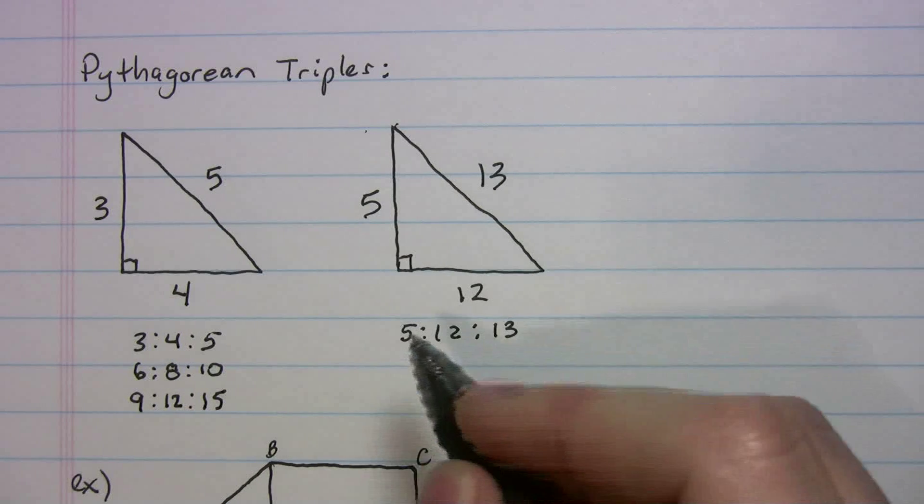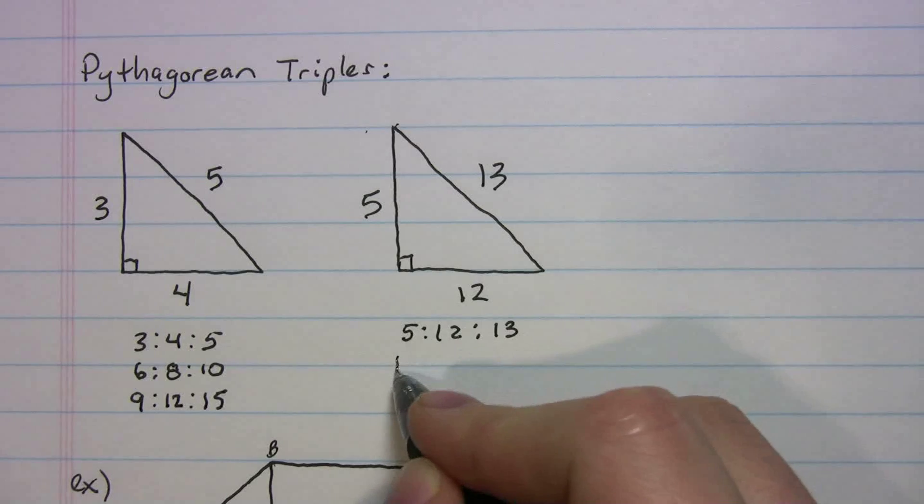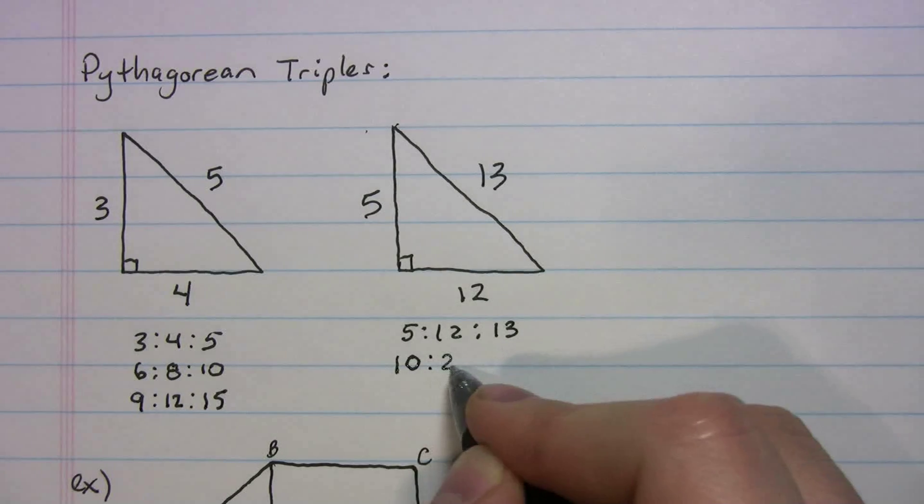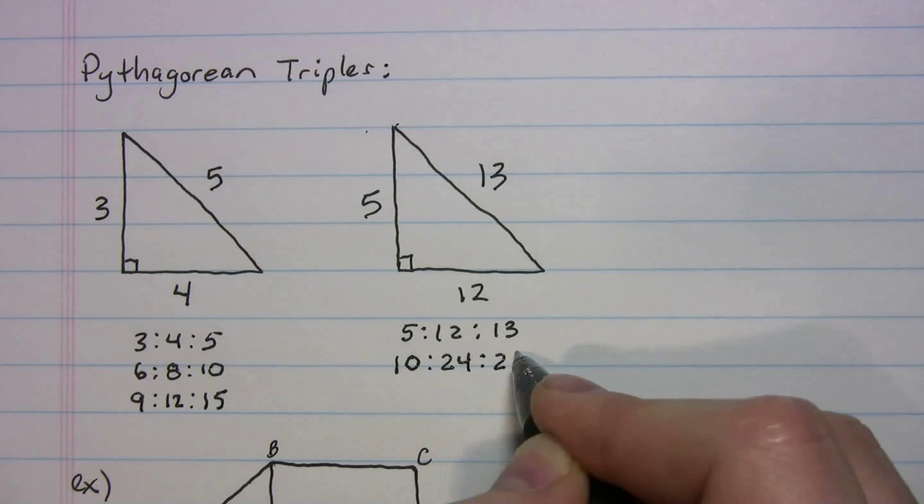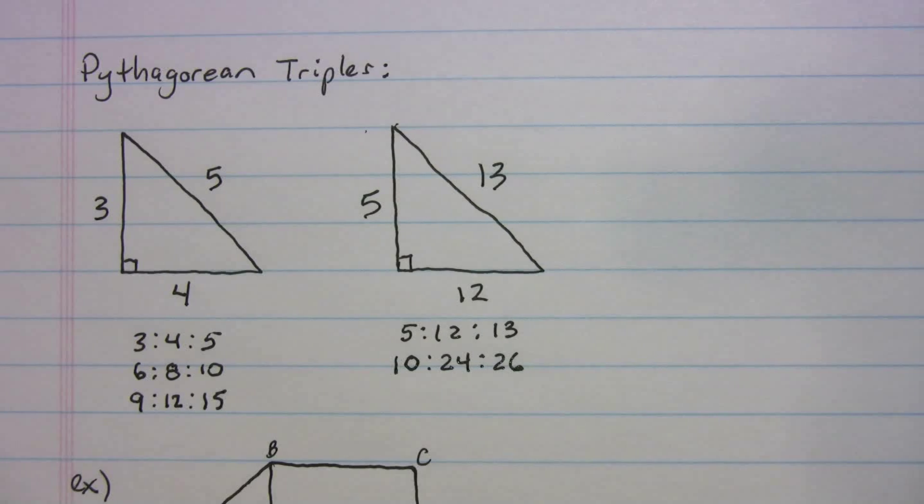And the same thing with 5-12-13. If you know the 5-12-13, you also know the 10-24-26. So two really good ones to memorize. Let's see if there's a problem where we can avoid doing Pythagorean theorem and recognize the triples.